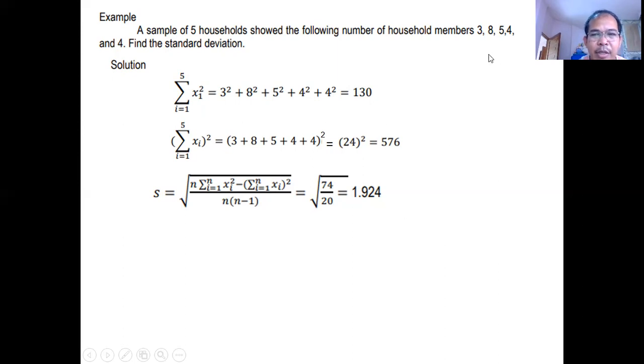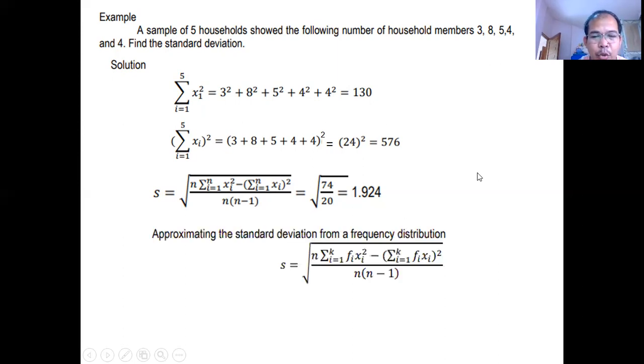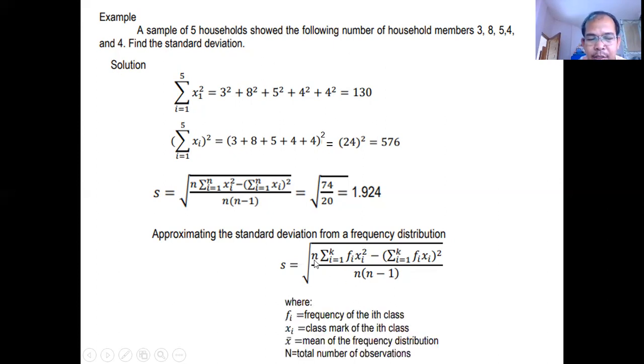So as I mentioned, ungrouped data. What if group data, meaning the data already presented in frequency distribution. We have to use this formula. Again, small letter n is the size of the sample, meaning number of observations. Ang f in the frequency distribution, it's the frequency. This one is the class mark. This one, frequency times class mark, then open close parenthesis, raised to the power of 2.